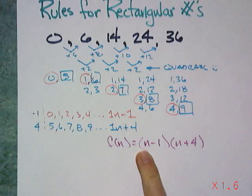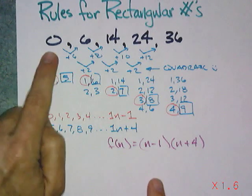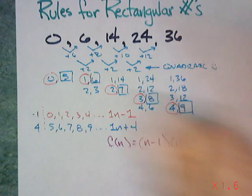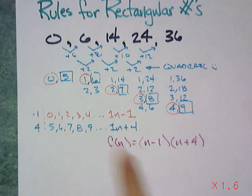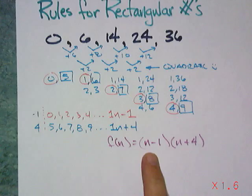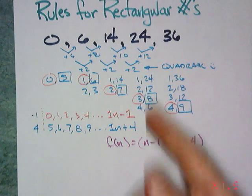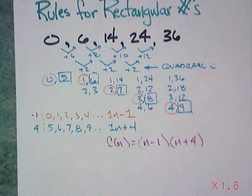And we should test it out. If I plug a 1 in here, I want to get a 0. So 1 minus 1 is 0 times 5. There it is, 0. 2 in should get a 6. 2 minus 1 is 1 times 2 plus 4 is 6. And you can see it looks like we did a good job.